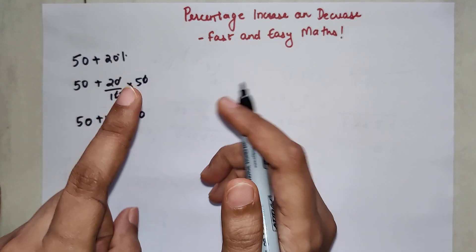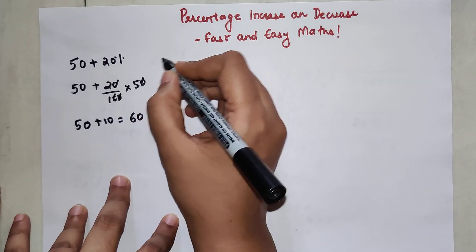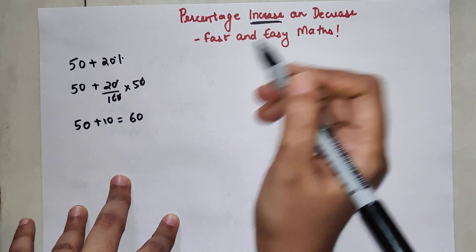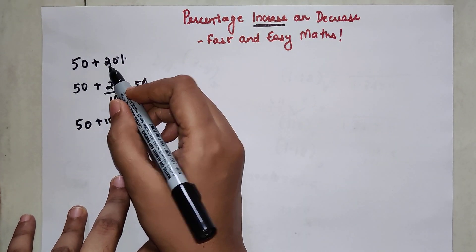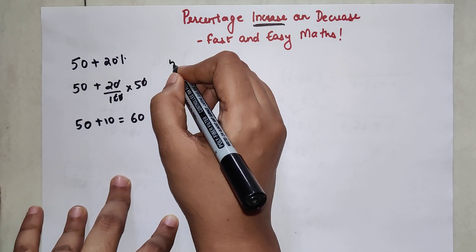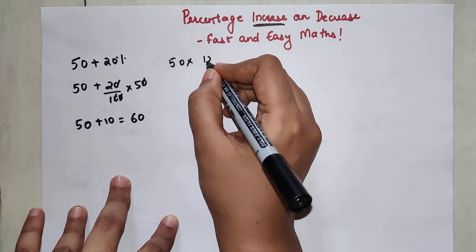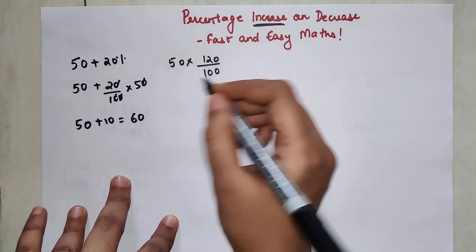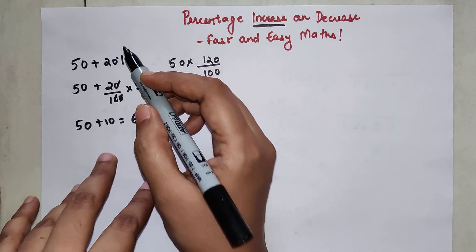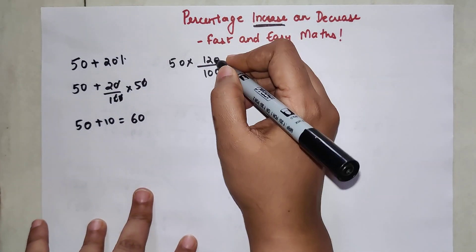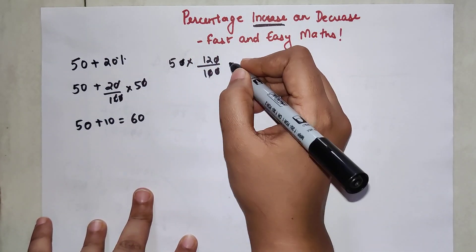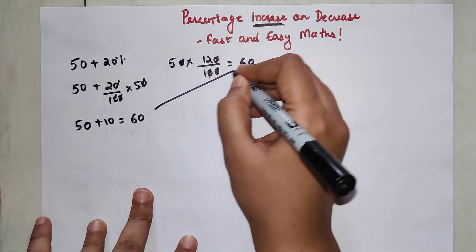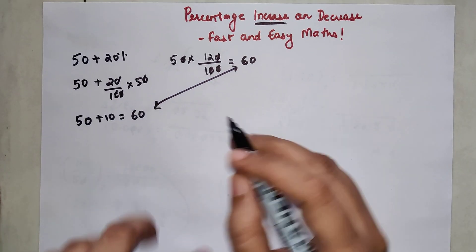Now I'm going to show you a trick to do this in one step. Since we are increasing the percentage, we add 20 to 100 and do 50 into 120 upon 100 — because 100 plus 20 is 120. So we are finding 120 percent of 50, and with cancellations, 5 into 12 is 60, which is our answer.